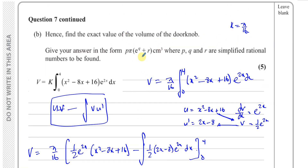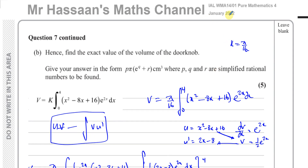That concludes question number 7, which is all about integration. The first part was volumes of revolution, and the second part was applying integration by parts. Other questions from this January 2022 paper can be found in the playlist, and other questions on integration by parts and volumes of revolution can be found in the integration playlist. Thank you for watching, and see you soon.